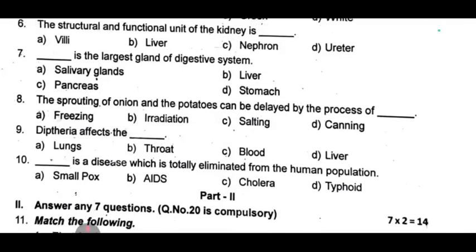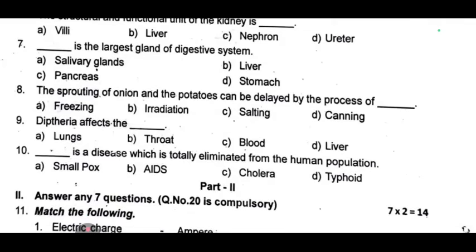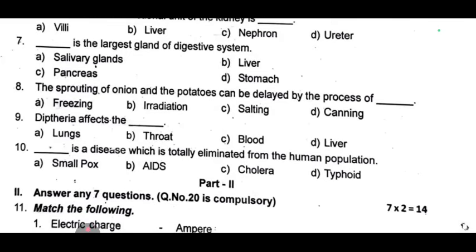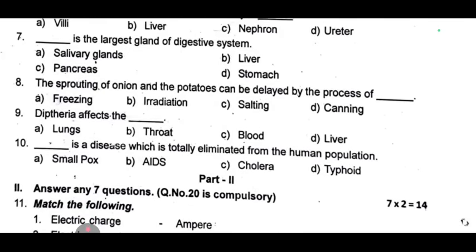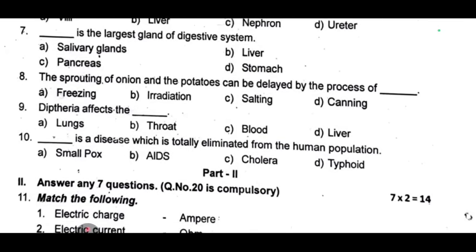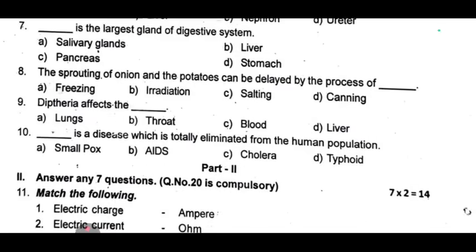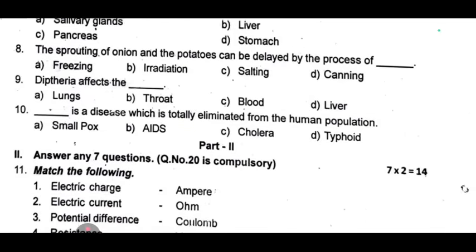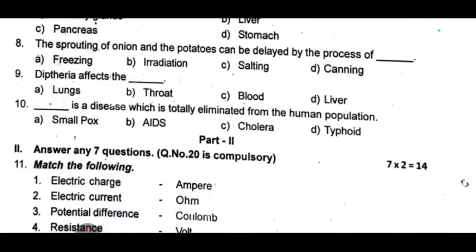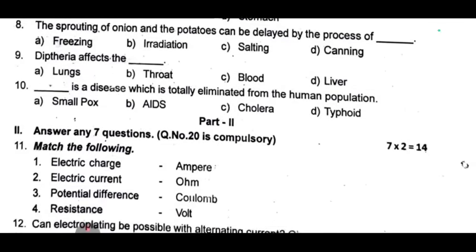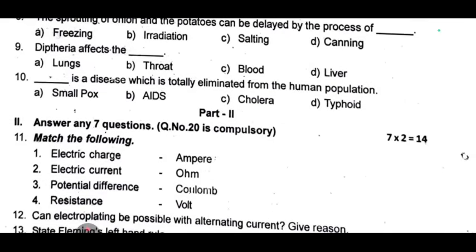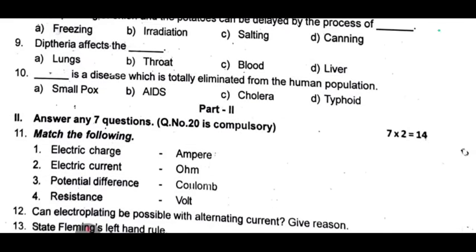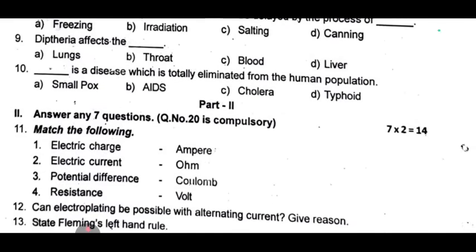Starting with the first one, it is most important. This is Part 2. Question number 21 is compulsory. Number 27 is only 2 points. Match the following — electric charge: ampere, electric current: ohm, potential difference: coulomb, resistance: watt. Match is done.